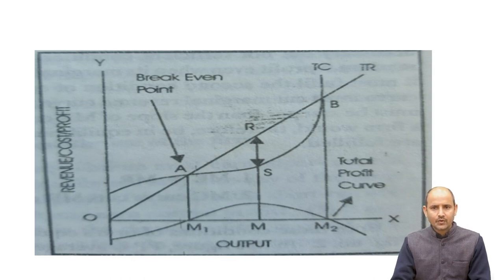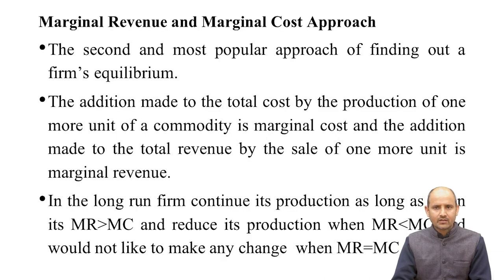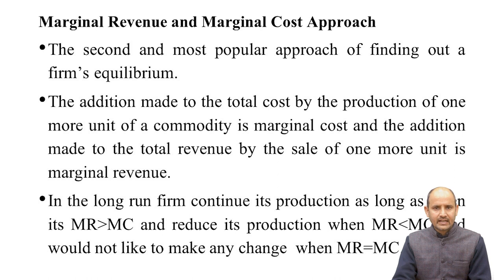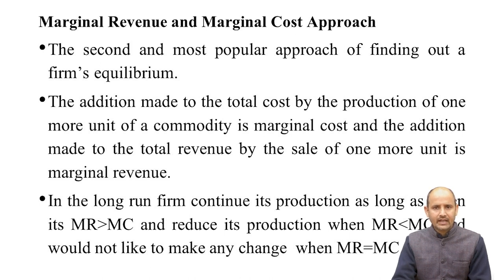The second and most popular approach for finding firm equilibrium is the marginal revenue and marginal cost approach. The addition made to total cost by the production of one more unit of a commodity is marginal cost (MC). The addition made to total revenue by the sale of one extra unit is marginal revenue (MR). In the long run, a firm continues production as long as MR is greater than MC, and reduces production when MC is greater than MR.